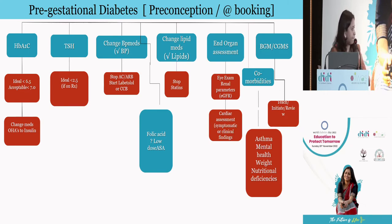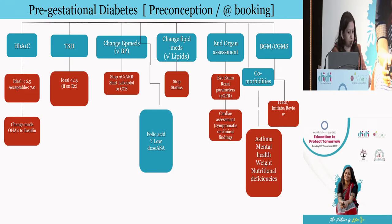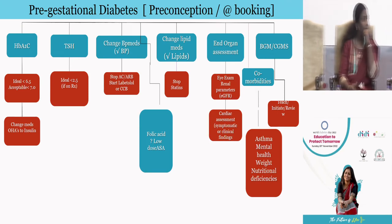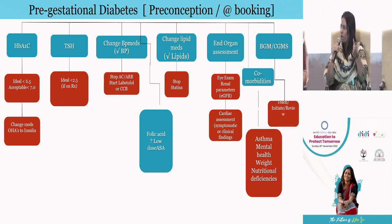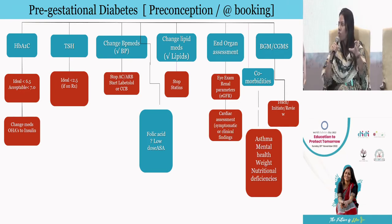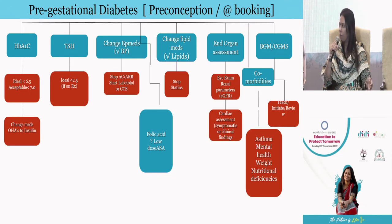All guidelines suggest an ideal preconception HbA1c should be less than 6.5%, though that may not always be possible — so at least 7% should be fairly okay. We are targeting strict blood sugar control during organogenesis. The lady should be educated about complications arising if HbA1c is above target, especially during organogenesis. When she comes to us preconception, we also need to revisit medications and switch her to insulin, plus or minus metformin, which are considered safe.